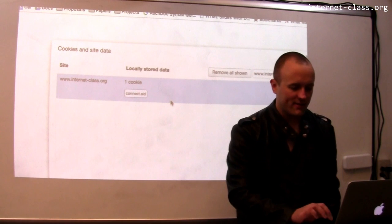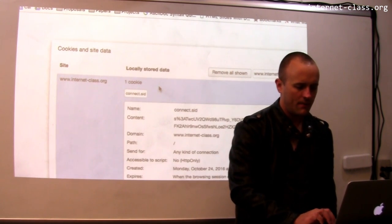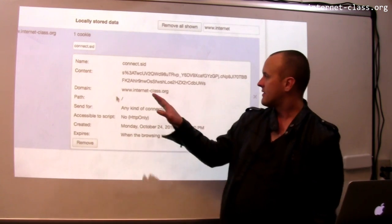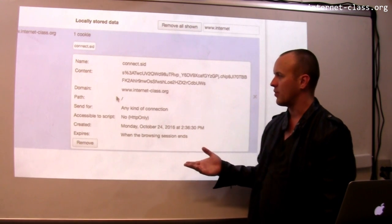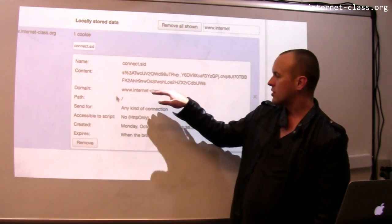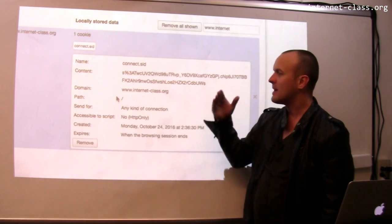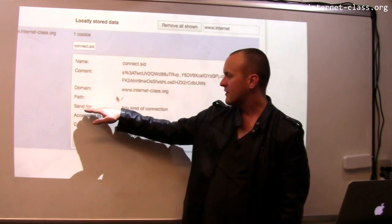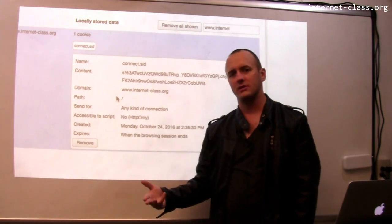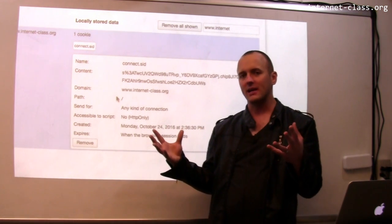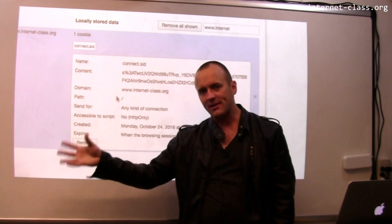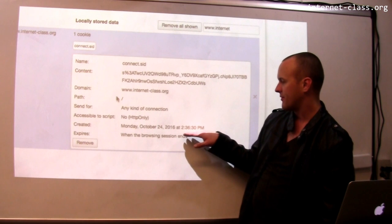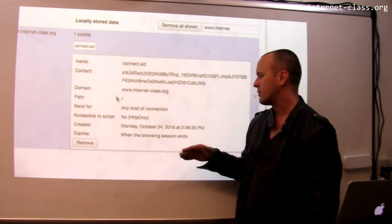And the cookie has some, and you can actually see what the information is inside the cookie. So let me zoom in a little bit here. This is the content, and I suspect this content is encrypted in some way. The domain, so this cookie was sent, it was set by www.internetClass.org. And I send this cookie along when I make any kind of connection to this particular website. So every time I make a connection to the website, the browser will send along this little piece of information. And it says when it was created, it was created on October 24th, and it says it expires when the browsing session ends.